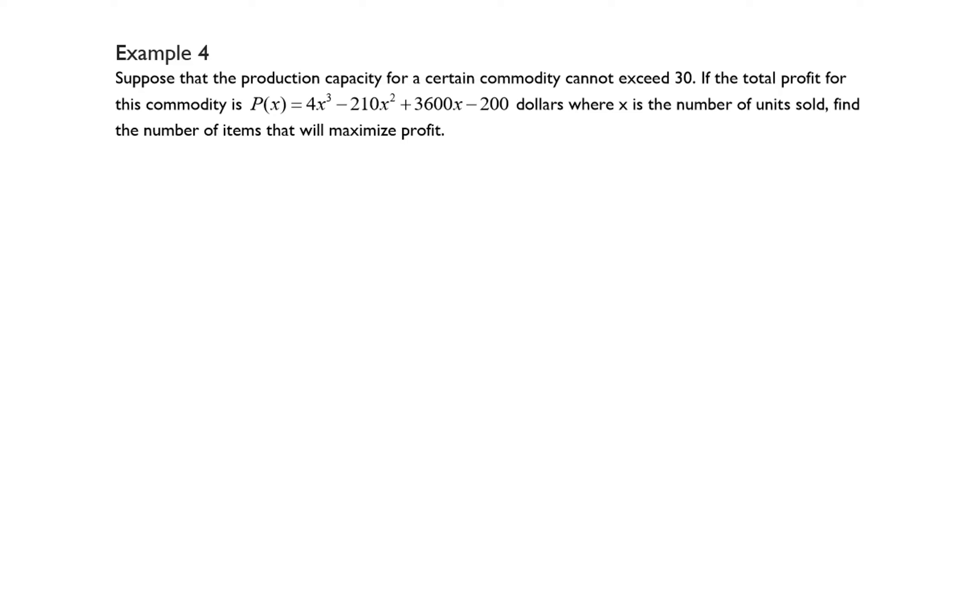Example 4 says suppose that the production capacity for a certain commodity cannot exceed 30. If the total profit for this commodity is p of x equals 4x cubed minus 210x squared plus 3600x minus 200 dollars, where x is the number of units sold, find the number of items that will maximize profit.